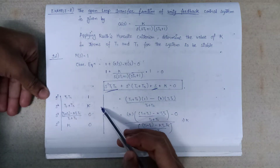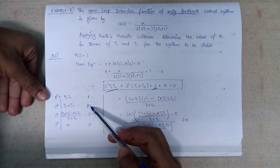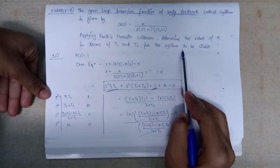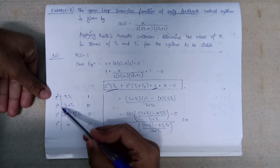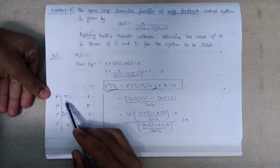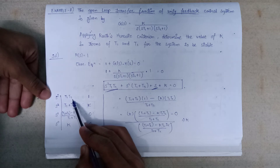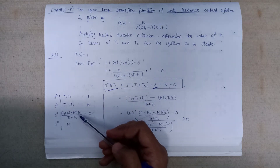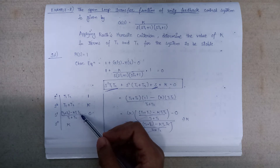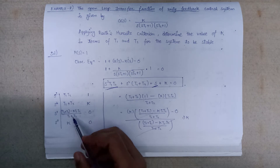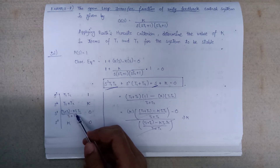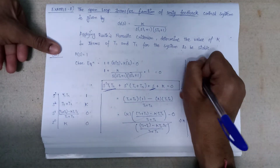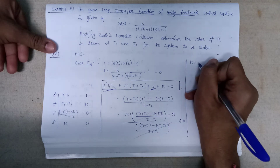This completes the formation of the Routh array. Now we find the value of k in terms of T1 and T2 for the system to be stable. For the system to be stable, there should be no sign change in the first column — all terms in the first column should have the same sign. There are two conditions: k should be greater than 0, and the s¹ row element should also be greater than 0.